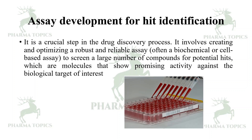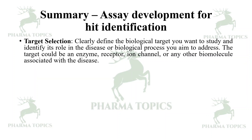Assay development for hit identification is a very crucial step in the drug discovery process. It involves creating and optimizing a robust and reliable assay — often a biochemical or cell-based assay — to screen a large number of compounds for potential hits, which are molecules that show promising activity against the biological target of interest. Clearly define the biological target, identify its role in a specific disease or biological process, and determine which biomolecule — such as an enzyme, receptor, or ion channel — is associated with the disease.